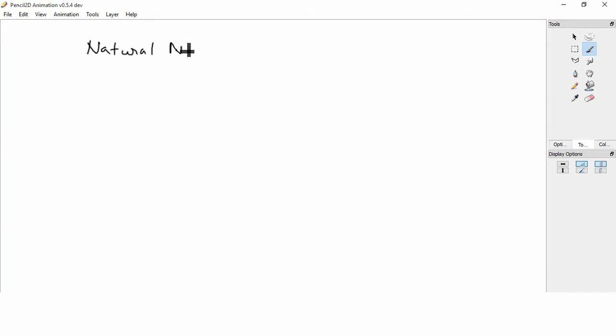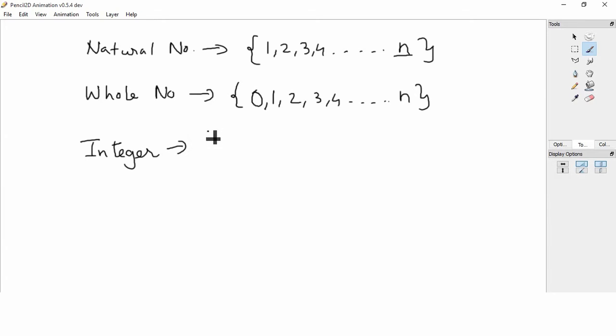We have learned natural numbers, whole numbers, and we are going to learn a new set which is called integers. So what are natural numbers? Collection of all numbers which starts from 1, 2, 3, 4 so on till N is called as natural numbers, and whole numbers we have 1 extra 0 added. Now integers, what are integers?